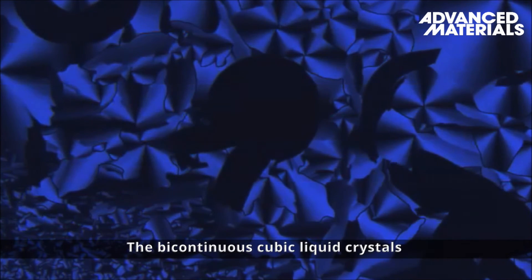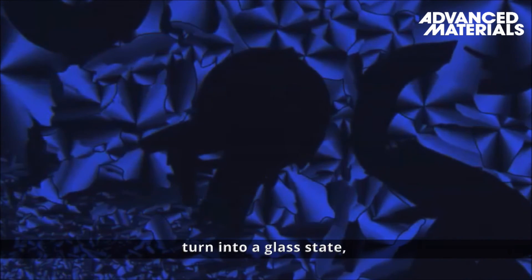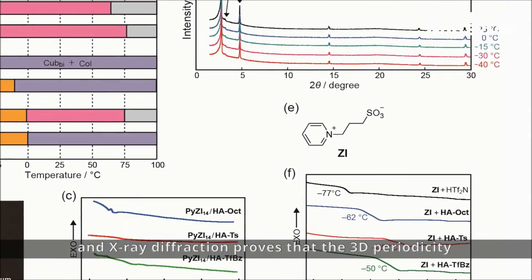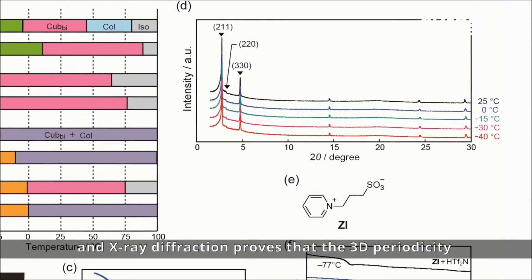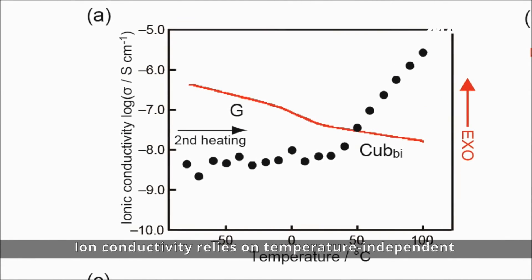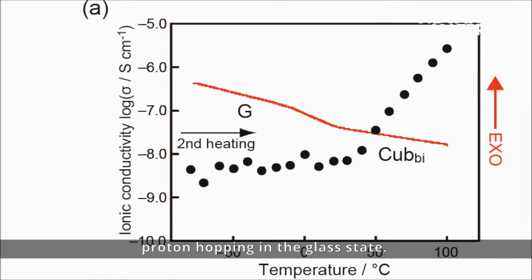The bicontinuous cubic liquid crystals turn into a glass state, which was confirmed by differential scanning calorimetry, and x-ray diffraction proves that the 3D periodicity is maintained. Ion conductivity relies on temperature-independent proton-hopping in the glass state.